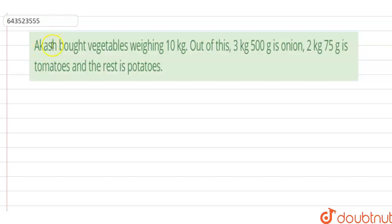Hello student, in this problem it is given that Akash bought vegetables weighing 10 kg. Out of this, 3 kg 500 gram is onion, 2 kg 75 gram is tomatoes, and the rest is potatoes. So we have to calculate how much potatoes weigh.